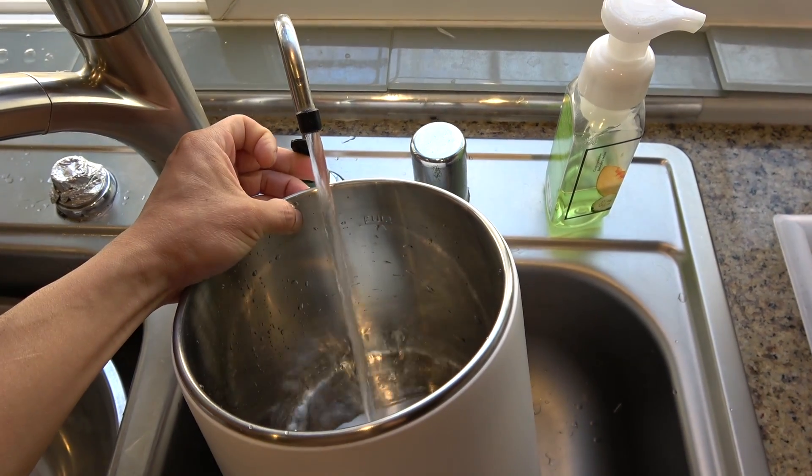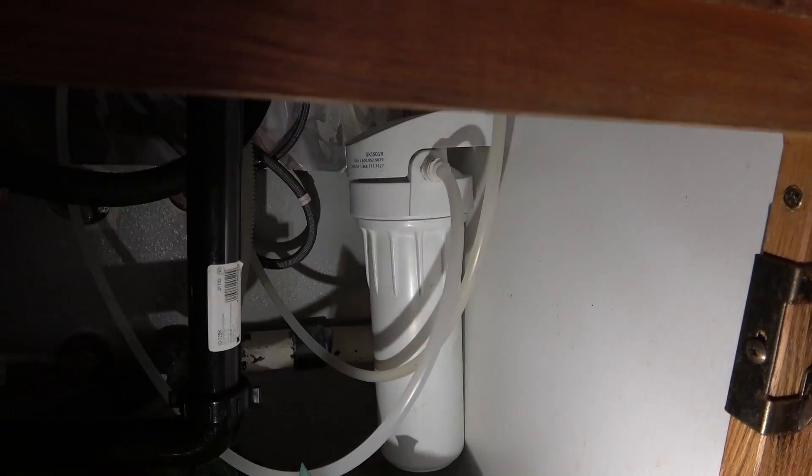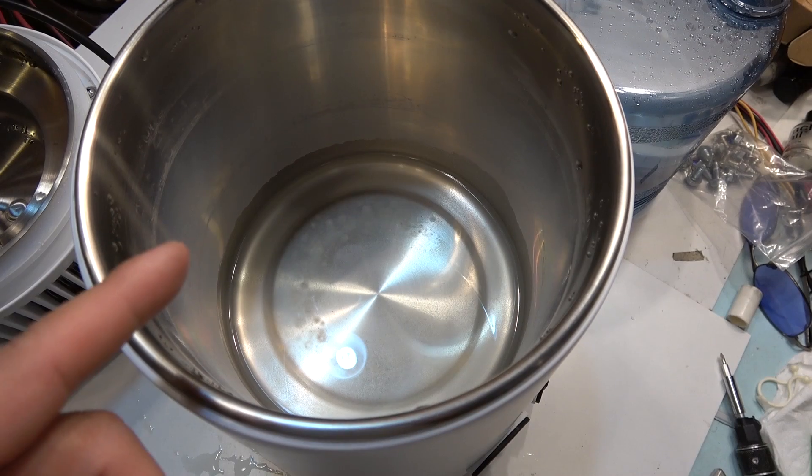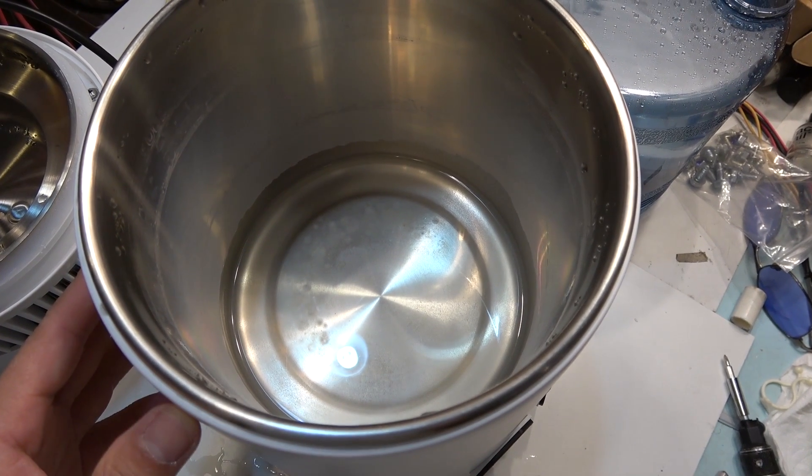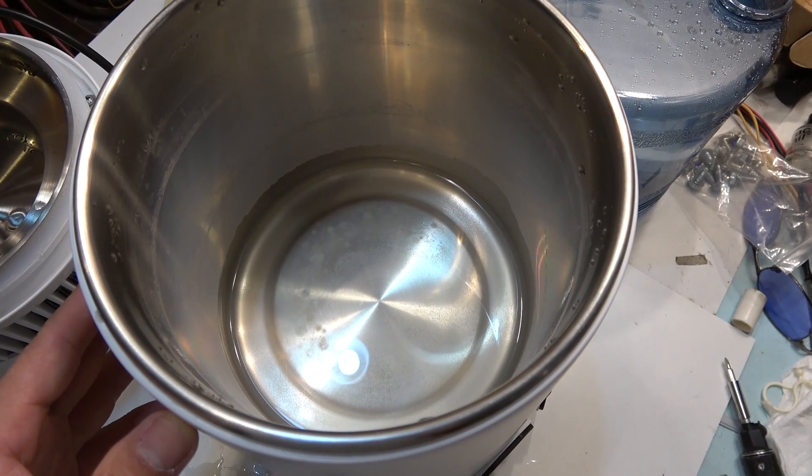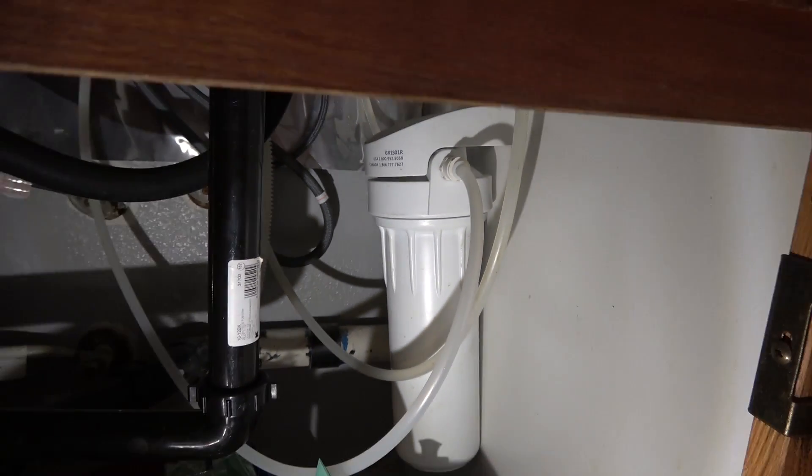For my second batch, I use filtered water, which is filtered by a carbon filter under the sink. This time I leave a little bit of water left in the pot with the residue to make my cleaning job a little bit easier. The residue is a bit less than tap water, partly because it has already been through the carbon filter.